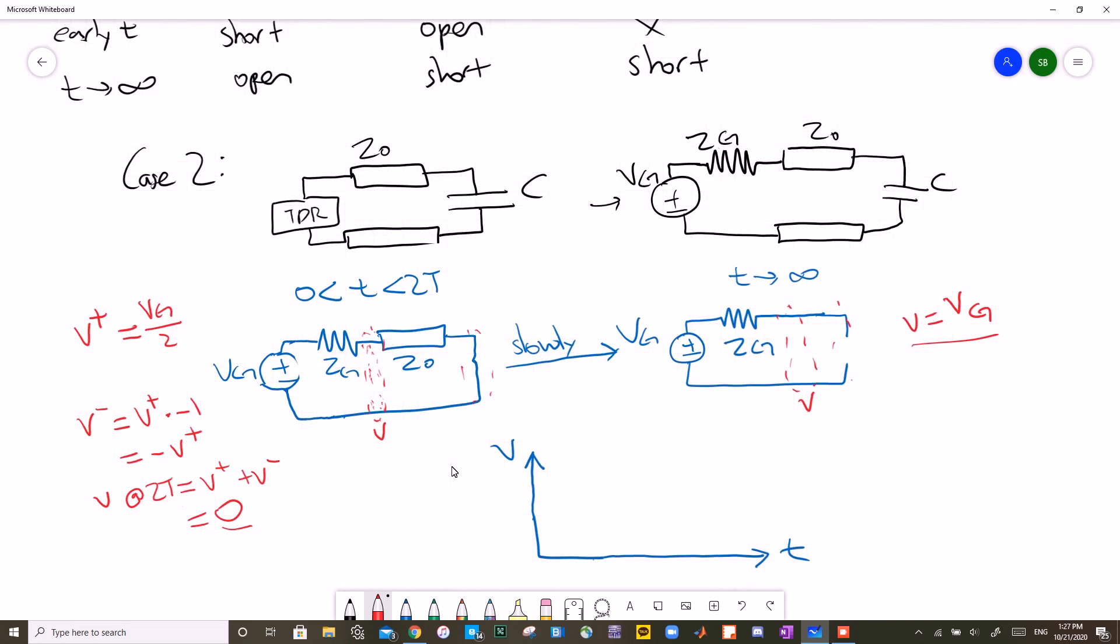And then it'll exponentially turn into this new circuit where V is VG because the capacitor is an open, so no current flows. Therefore we start at VG over 2, drop down to 0 at T equals 2T, and then we gradually increase to our final value of VG.